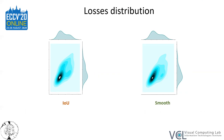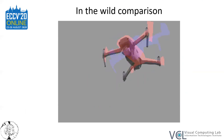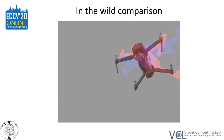Finally, we provide comparison results between a model trained with an IOU loss and one trained with our proposed smooth objective on unseen real data. The smoothly supervised model minimizes the inconsistency in time and is more robust, as can be seen from the above video. Thank you for viewing. For more information, please visit our project page.